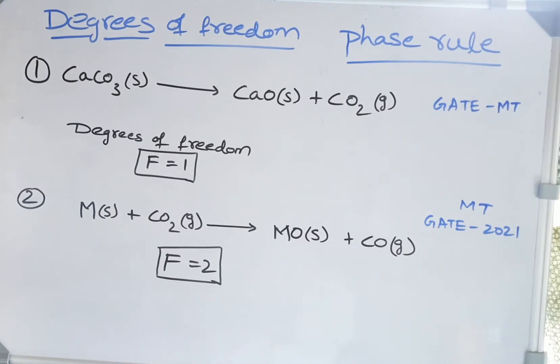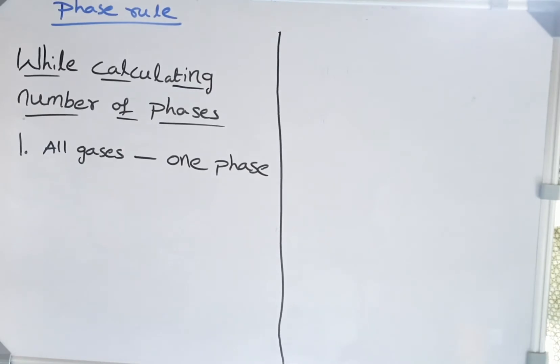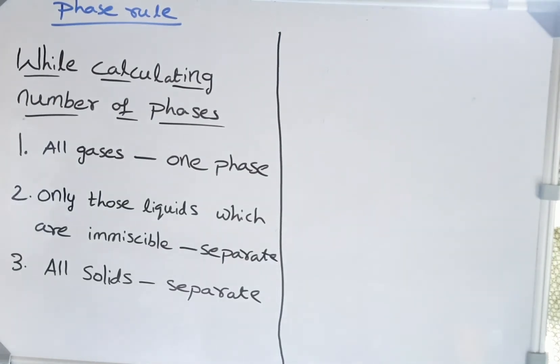Now let me give you important points while applying the phase rule. First, while calculating number of phases: Point 1, all gases are taken as one phase according to the definition of phase. Point 2, all liquids which are immiscible, meaning completely separable, are considered different phases. Point 3, all solids are taken as completely separate phases.